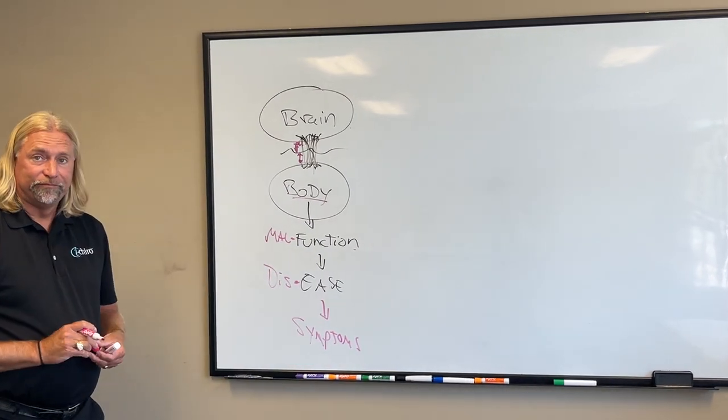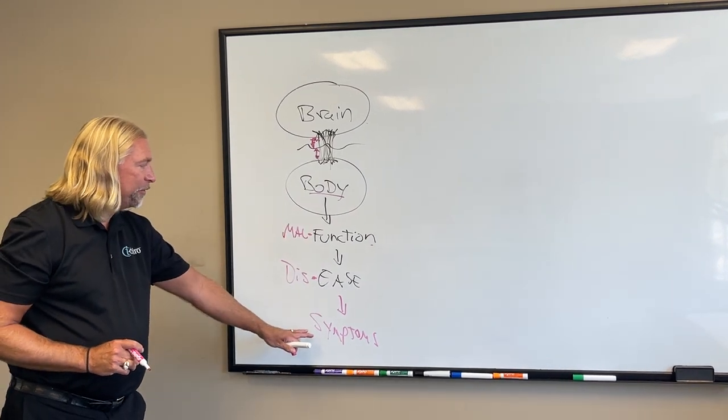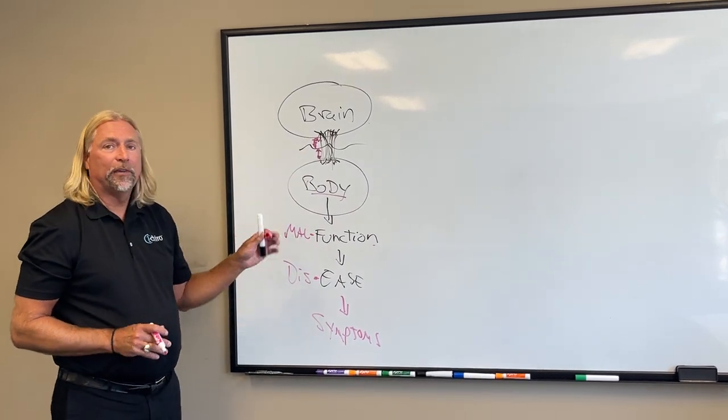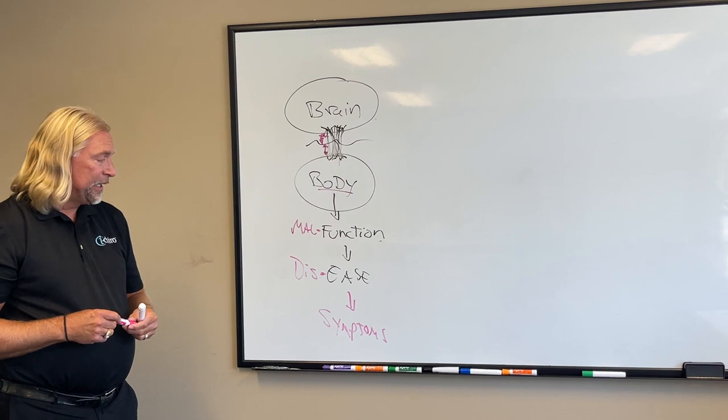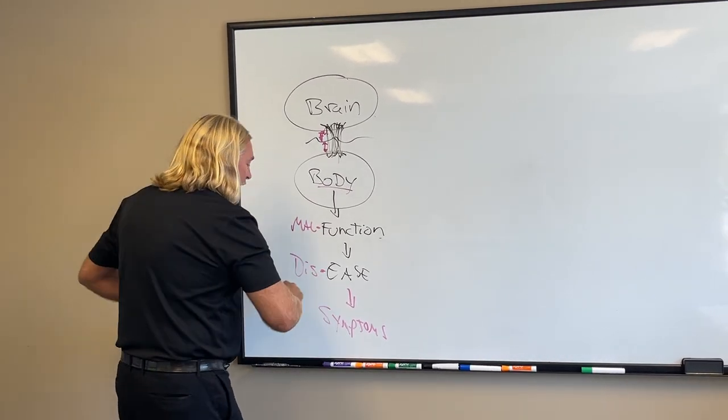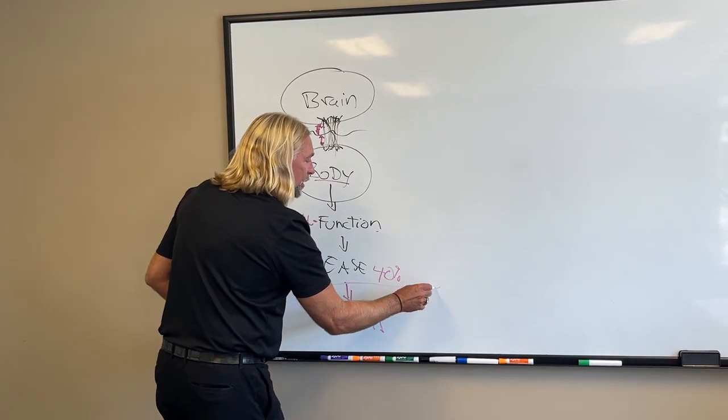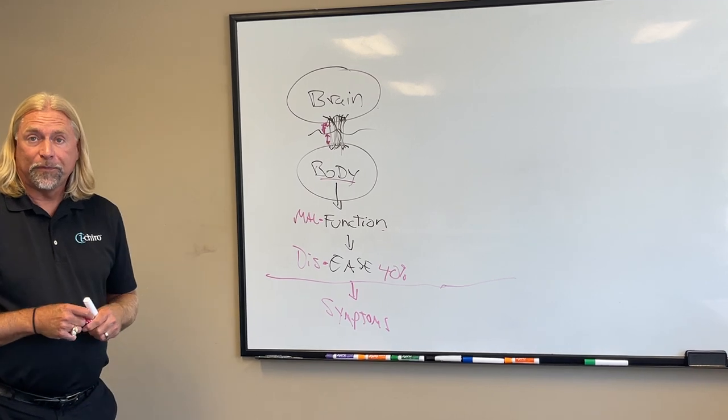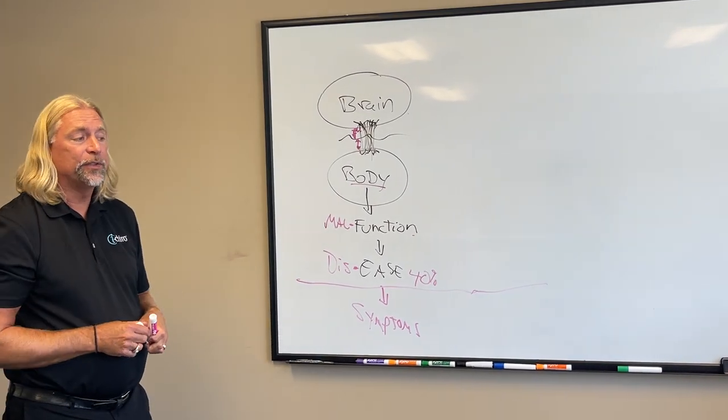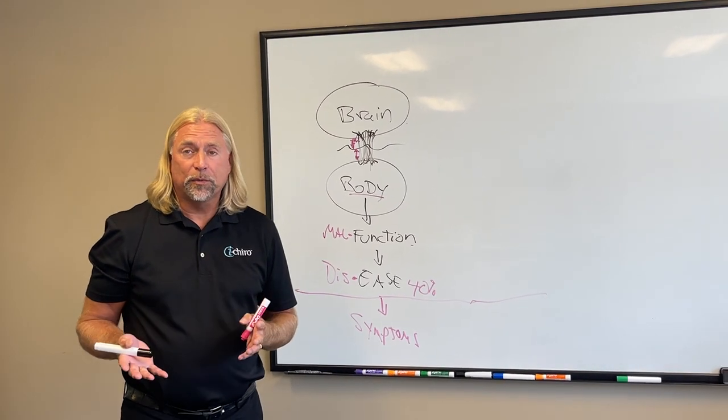That's where you're feeling it. So it's got to get bad enough that you actually feel it. But can you see how things are actually developing before that? Usually you don't feel any of these symptoms until you get below about 40% function, and then those symptoms start to show up. So it's got to get pretty bad.